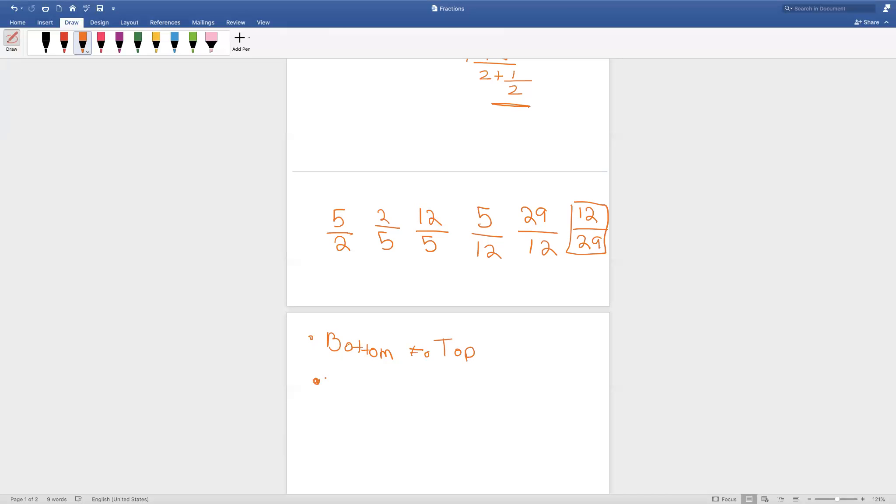Our next concept is that 1 over a fraction is equal to the reciprocal of that fraction. 1 by 1 half: the reciprocal of 1 half is 2, and therefore 1 by 1 half is equal to 2.